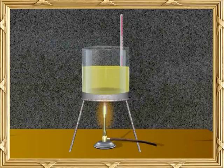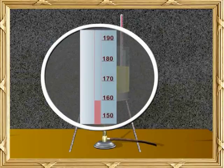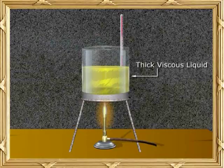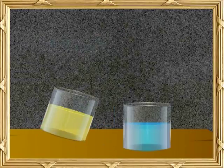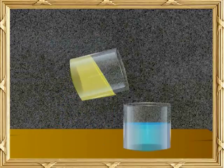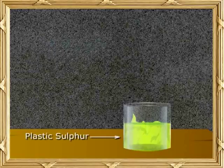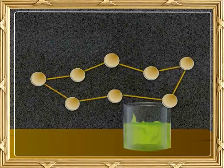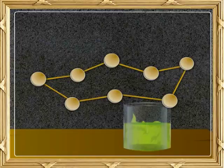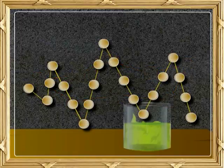If this is further heated to 160 degrees Celsius, it produces a thick viscous liquid. If this liquid sulphur is suddenly poured into cold water, a soft sticky rubber-like material is obtained. This is called plastic sulphur. The eight-membered ring, S8, breaks up and produces plastic sulphur containing long open coil chains.